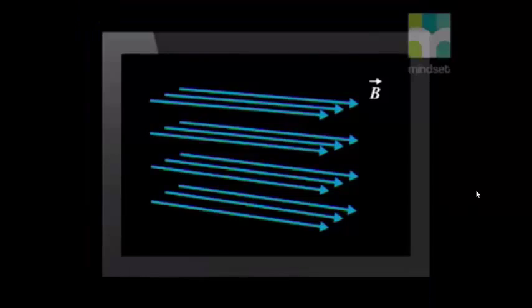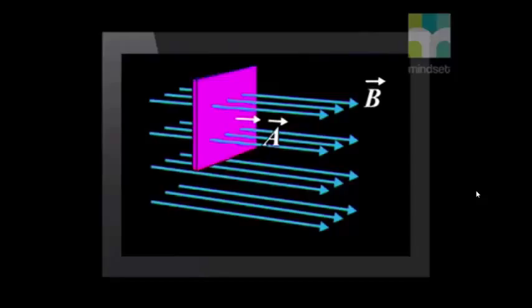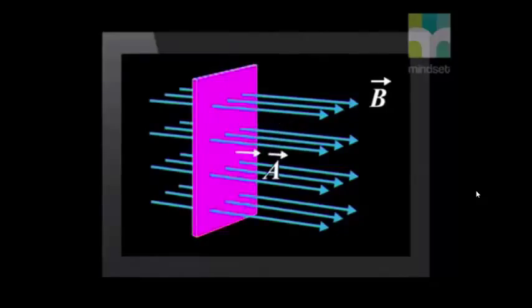In physics, the magnetic flux through a surface is the component of the magnetic field passing through that surface. Here we see the magnetic field lines B that pass through the air. When the magnetic field is at an angle of 90 degrees to the surface A, the magnetic flux is represented by the number of field lines penetrating that area of the surface. Even if the surface area rotates about the magnetic field lines, the magnetic flux does not change. However, the magnetic flux increases when the area increases because more magnetic field lines penetrate that surface area.